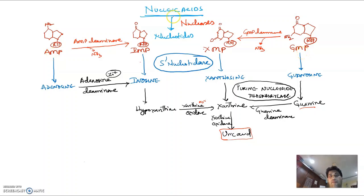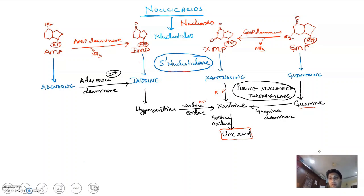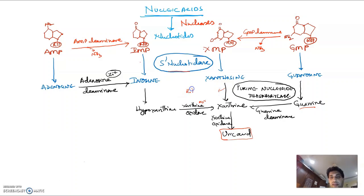To summarize: AMP, IMP, XMP, and GMP are formed from nucleic acids by the action of nucleases. By the action of 5'-nucleotidase they get converted to their nucleosides. Adenosine, because it cannot get converted further directly, undergoes deamination to form inosine. Inosine, xanthosine, and guanosine get converted to their nitrogen bases in the presence of a phosphorylase, releasing ribose-1-phosphate. These form hypoxanthine, xanthine, and guanine, which get converted to uric acid in the presence of xanthine oxidase.